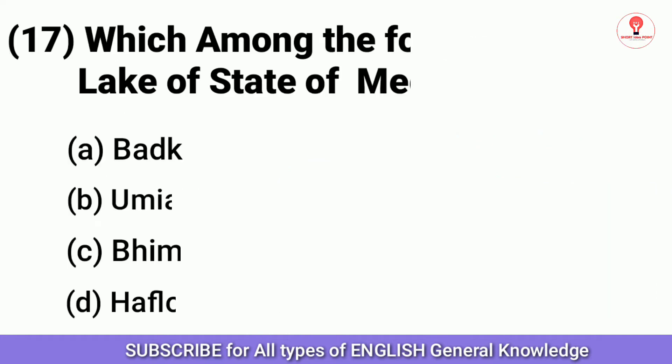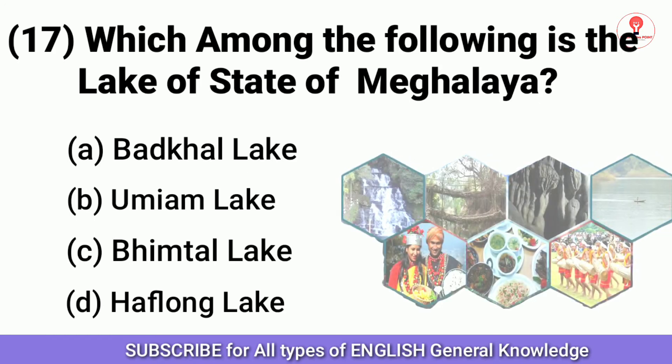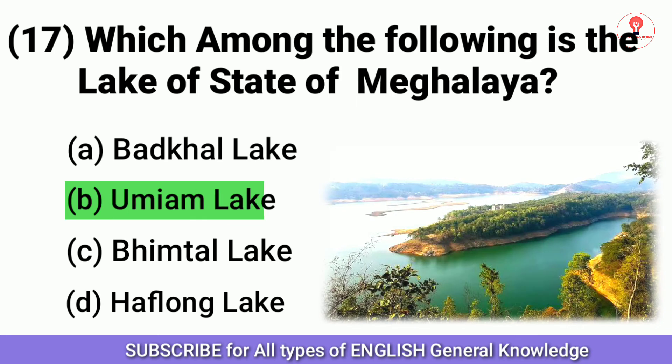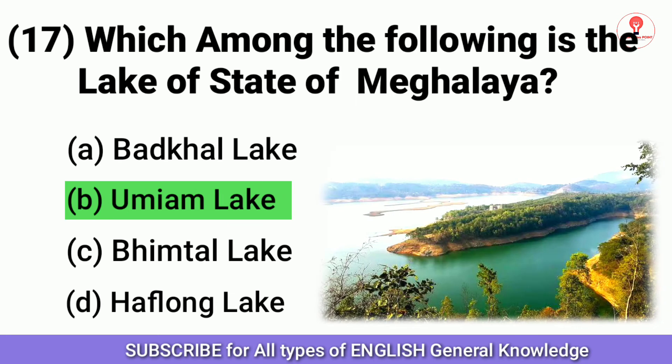Which among the following is the lake of the state of Meghalaya? Answer B: Umiam Lake.